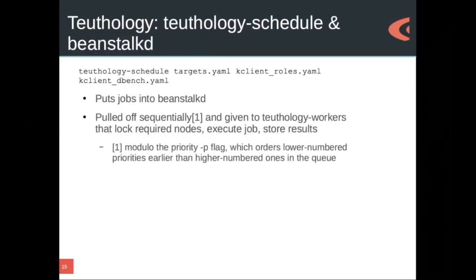In addition to running jobs directly from the command line on your own machine out to the lab, you can schedule things. When you schedule things, that puts jobs into a Beanstalk queue at the moment, although we might be changing that in the future. Those jobs are just grabbed and executed. Then the results get stored and you can get an email back if you want, if you included an email address, or you can just watch it. That's the very simplest way to use Teuthology from a decade ago — it's not actually how we use it now, because combining all these fragments is kind of a pain and not scalable.